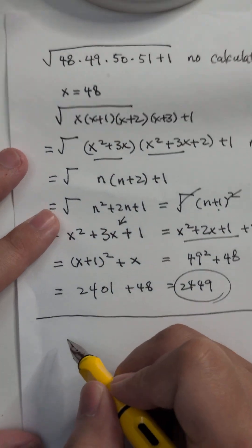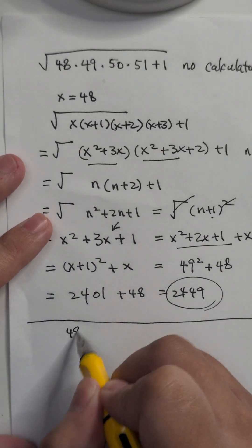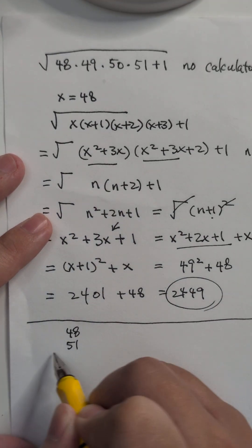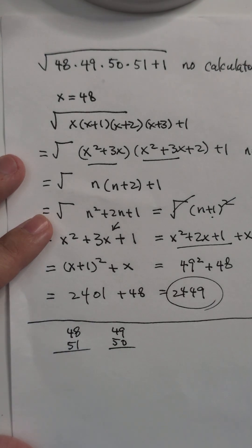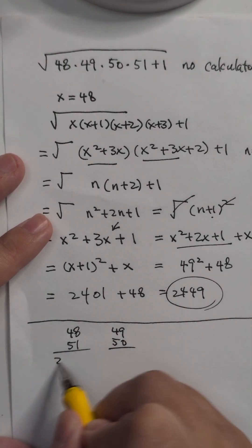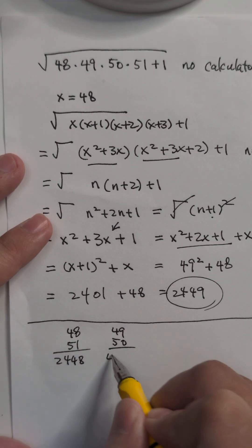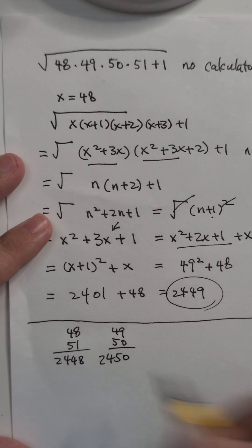So actually, let's do the simple multiplication first. 48 times 51, and then 49 times 50, and you will get 2448 and 2450.